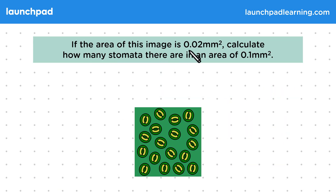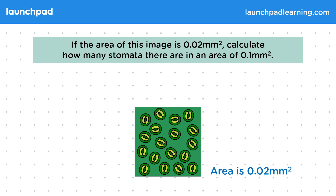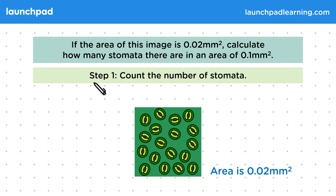If the area of this image is 0.02 mm², calculate how many stomata there are in an area of 0.1 mm². Let's work out the coverage in this instance. The area is 0.02 mm² — let's note this down. Step one: count the number of stomata. If you take a moment to count the stomata in this image, you will count 18.